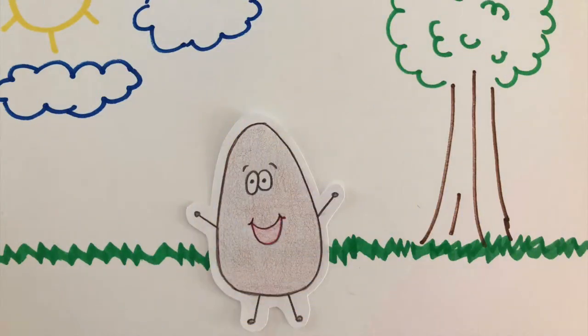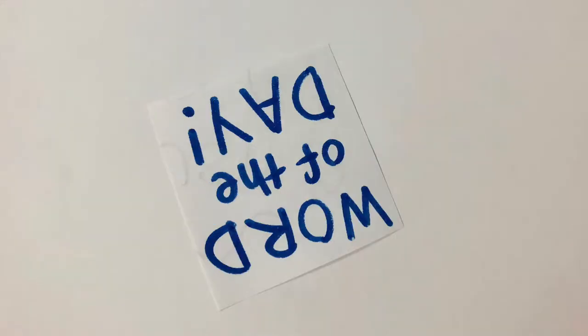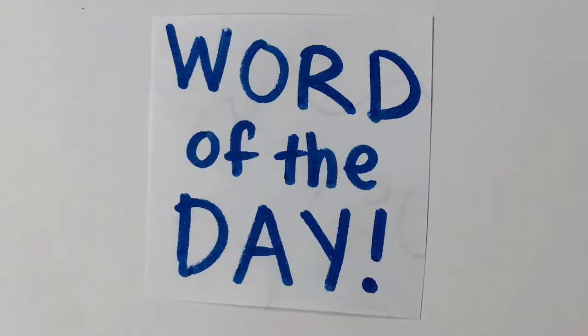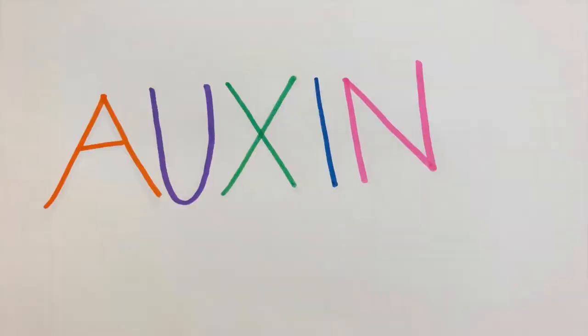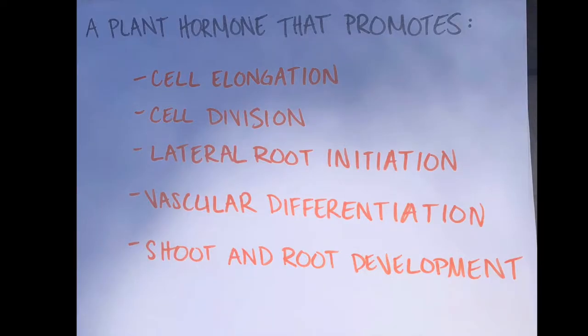Now that we've learned the function of seed coats, it's time for the word of the day. Today's word of the day is auxin. Auxin is a plant hormone that promotes cell elongation, cell division, lateral root initiation, vascular differentiation, and shoot and root development.